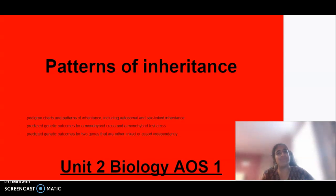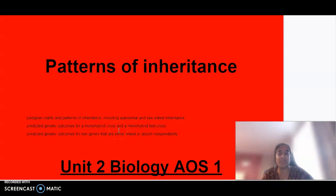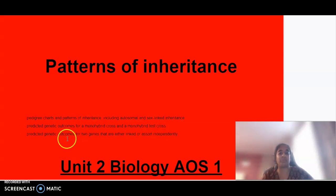Hello everybody, welcome to Unit 2 Biology Area Study 1. Today we are looking at patterns of inheritance — pedigree charts and how we can identify patterns of inheritance from them, including autosomal and sex-linked inheritance. We'll be looking at predicting outcomes for a monohybrid cross and a test cross, and how we can predict genetic outcomes for two genes if they're linked or assort independently.